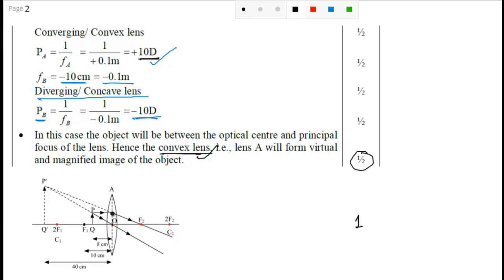So I hope you know that it will pass through this F2 and one is going through the optical center, it will go without any deviation.